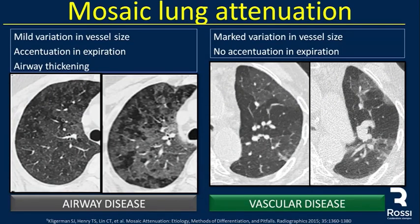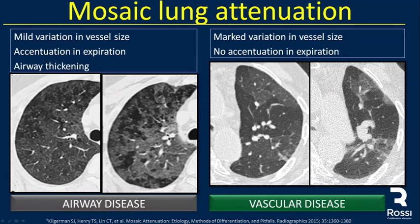In vascular disease, we see a marked variation in vessel size with enlargement of the vessels. There is no accentuation in expiration. We see the mosaic lung attenuation with areas of high and low attenuation, and that pattern persists without much change in the expiratory CT.